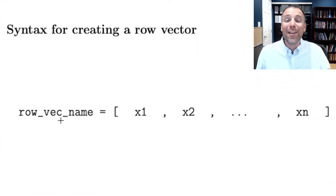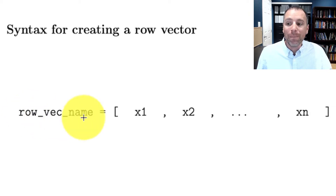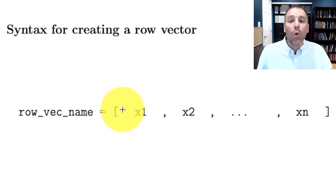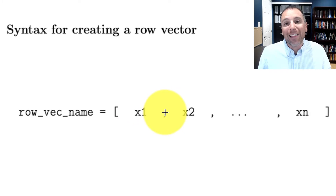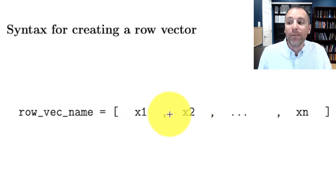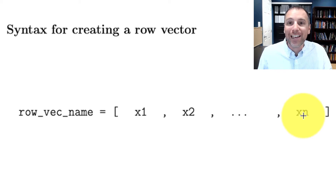When we use MATLAB to define row vectors, we use a very similar structure to what we saw in column vectors. On the left-hand side of our assignment operator, we define a variable name. We then use the equal sign to say the variable we're defining is going to get the value on the right-hand side. We start our row vector definition with the left square bracket and end it with the right square bracket. We type individual numeric scalars inside, delimited by commas. x sub 1 is the first entry in row 1, column 1. The comma signals the end of column 1 and moves on to column 2, and so on, all the way to xn, using n minus 1 commas to separate the individual columns.